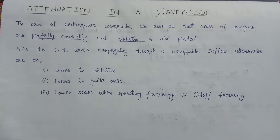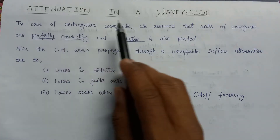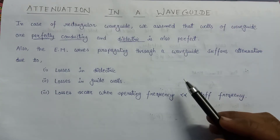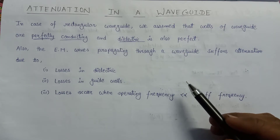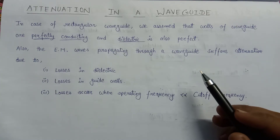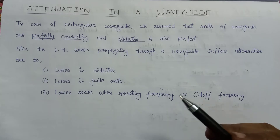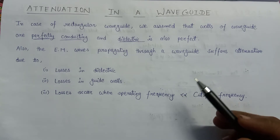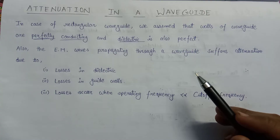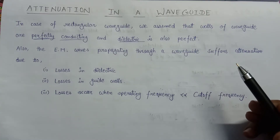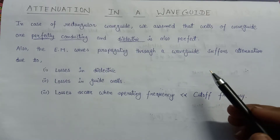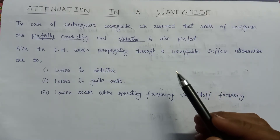Welcome all. In this lecture, we are going to study about attenuation in waveguide. In the previous lecture series on rectangular waveguide, we assumed that our wave is propagating in the positive z direction, but during its propagation it suffered some attenuations inside the rectangular waveguide. These attenuations are due to some losses associated with the rectangular waveguide. Let us discuss those attenuations.